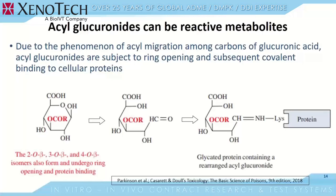Acyl glucuronides can be reactive metabolites. Although UGTs are known as detoxifying enzymes that increase water solubility of xenobiotics and facilitate their elimination, some glucuronides cause toxicity. Acyl glucuronides are metabolites of concern in this regard. There are two mechanisms that lead to formation of covalent adducts of the glucuronide — or more specifically their xenobiotic portion, also known as the aglycone — binding to proteins.